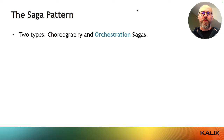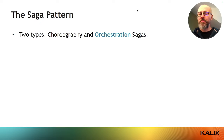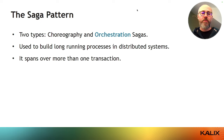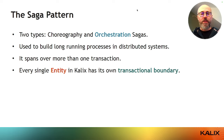There are two types of sagas: choreography sagas and orchestration sagas. In a previous webinar I covered choreography sagas, so today I will talk about orchestration sagas. In both cases, a saga is about implementing a long-running process in distributed systems — a process that spans over more than one transaction. A Kalix entity lives in its own transaction boundary.